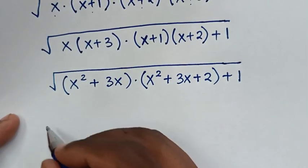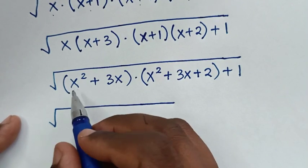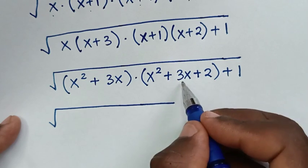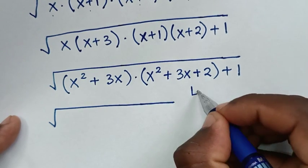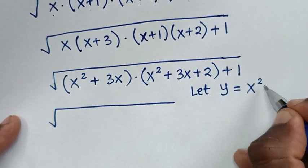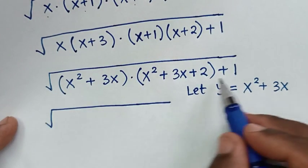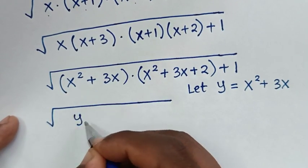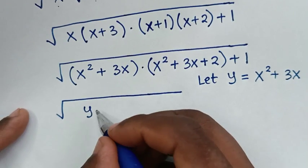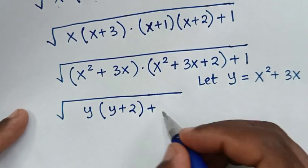In the next step, we notice that x² plus 3x is common in both factors. So let y equal to x² plus 3x. The expression under the square root becomes y times (y plus 2), then plus 1.